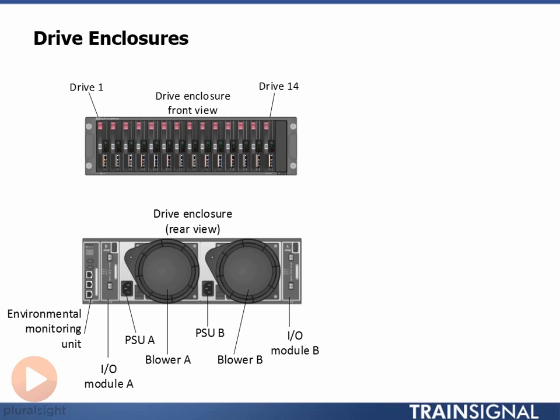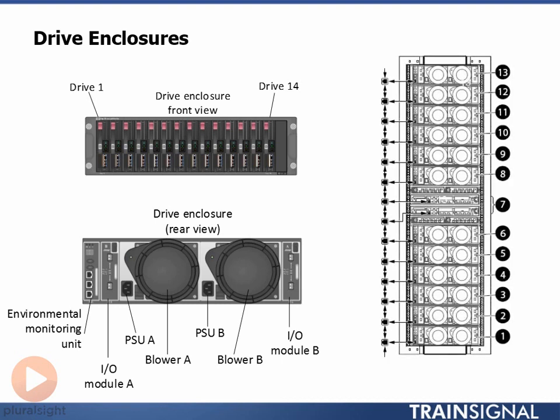Each drive shelf or drive enclosure also has an address on the back end. We see this in the schematic diagram of the rear view of a single cabinet HP EVA storage array. If you look closely at the diagram, you'll see that we've got 12 drive enclosures in the rack, numbered 1 through 6 and 8 through 13, with the controllers in the middle at number 7. The important point being that every drive enclosure on the back end has an address.